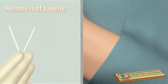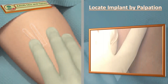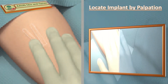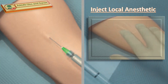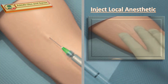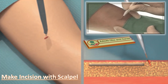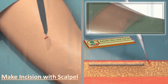For removal, the patient shall be in a similar position and similar aseptic technique shall be applied as for insertion. First, locate the implants by palpation, possibly marking their position with a marker pen. Inject a small amount of local anesthetic under the ends of the implants that are closer to each other. Make a 4 mm incision with a scalpel close to the ends of the implants, keeping the incision small.